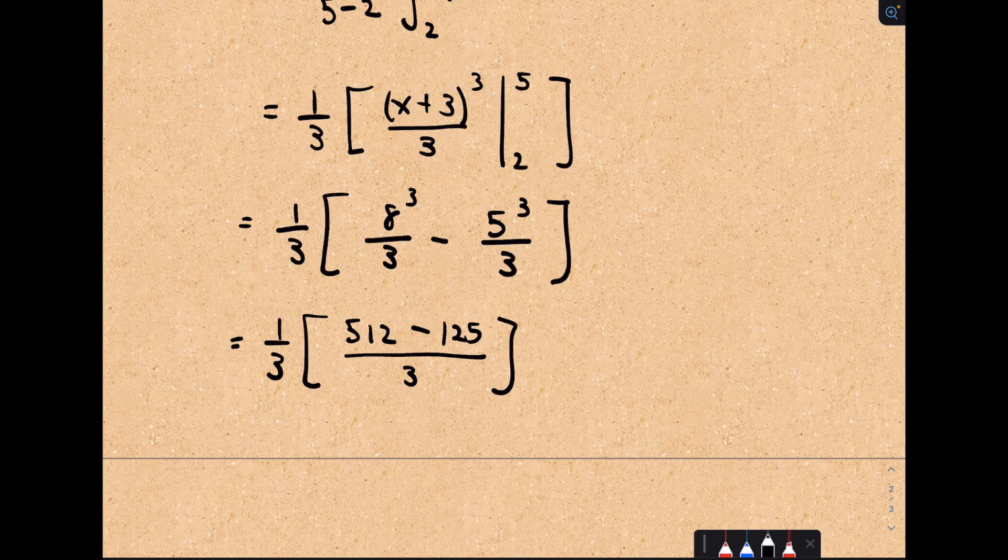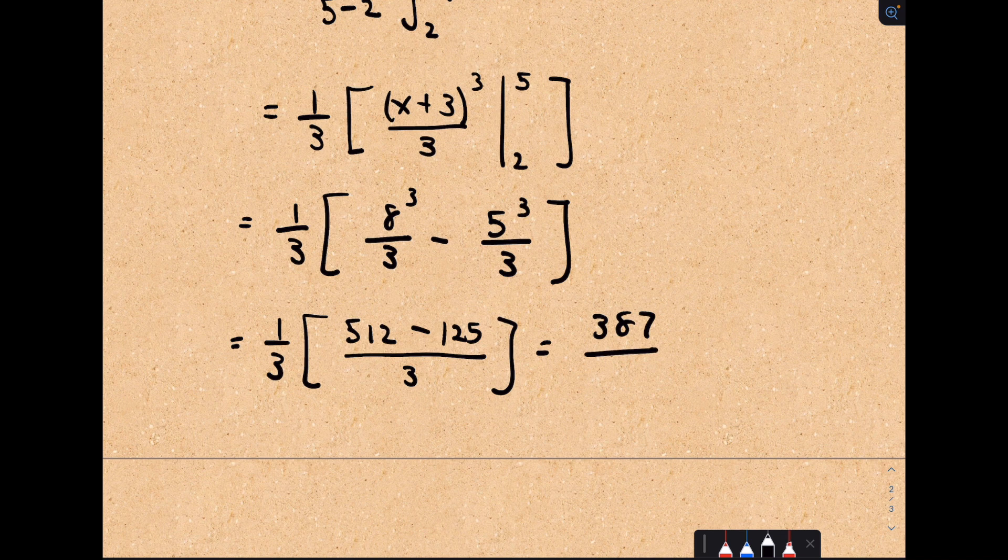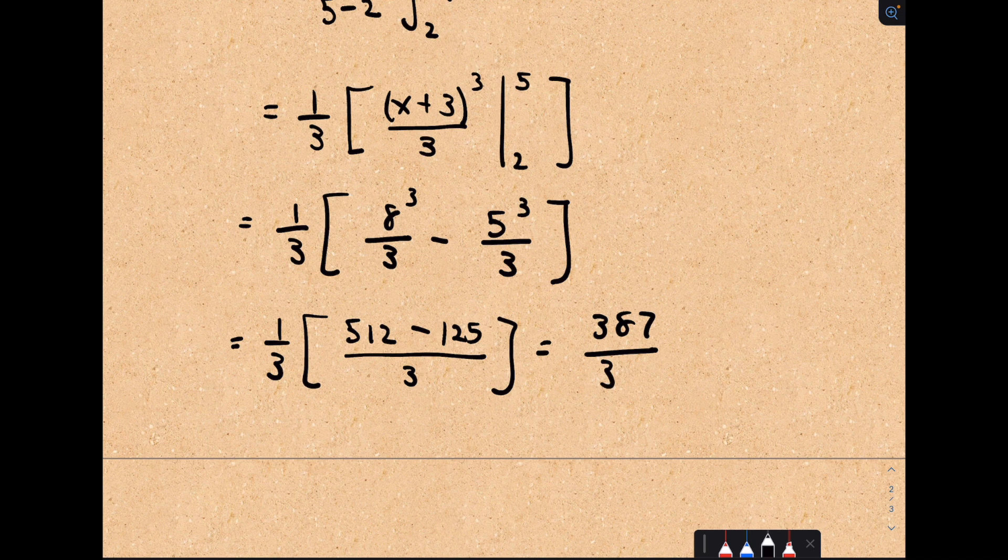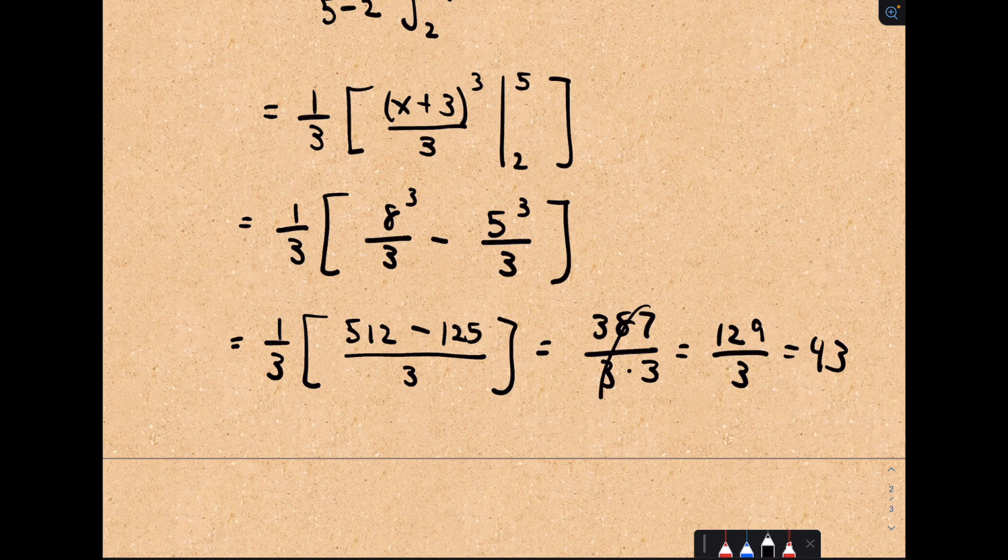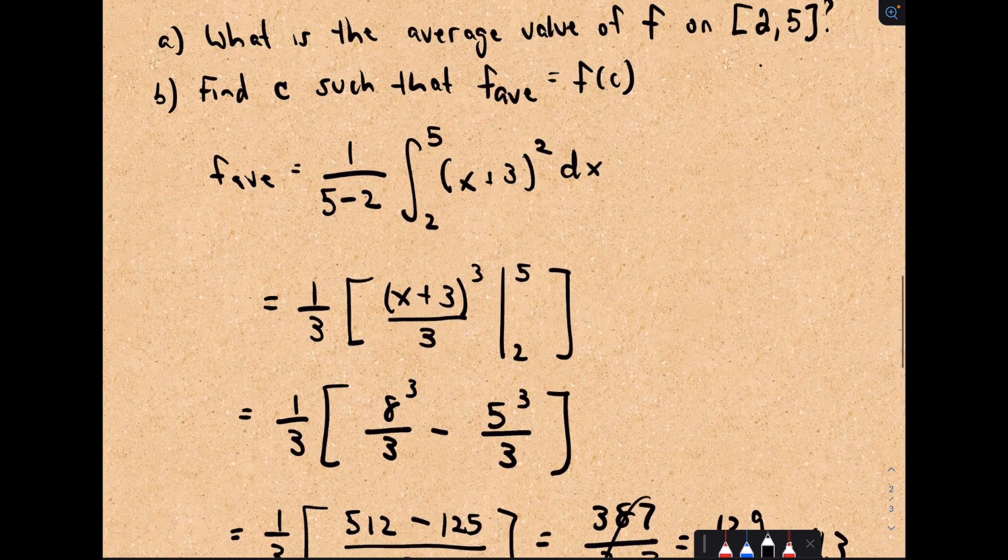So this is going to be 387 over 9. And does 3 go into that? Yes. So this is 3 times 3 in the denominator. 387 divided by 3 is 129, and that's even 43. So this is nice. Our average value, I thought we were going to get a weird fraction, is 43. That's our average value.